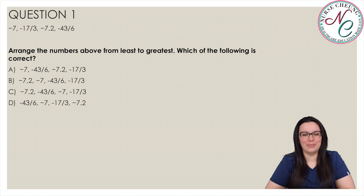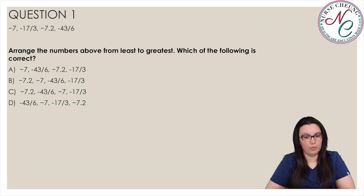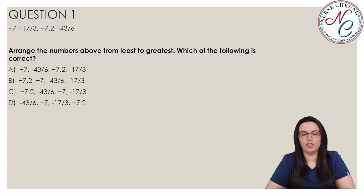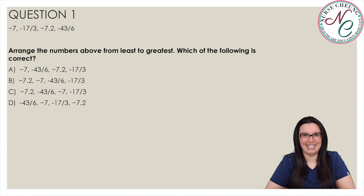Beginning with question 1: negative 7, negative 17 over 3, negative 7.2, and negative 43 over 6. Arrange the numbers above from least to greatest. Which of the following is correct? Is it A, B, C, or D?